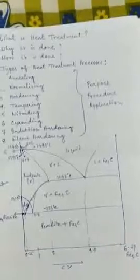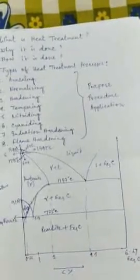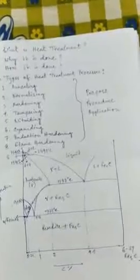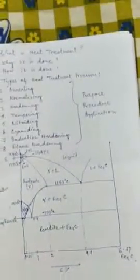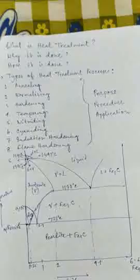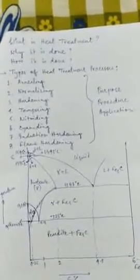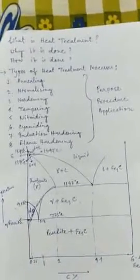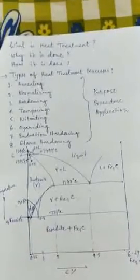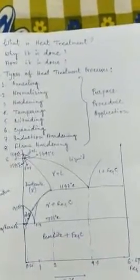Heat treatment is carried out without change of composition, to change the grain size, to modify the structure of the material, and to relieve internal stresses. The heat treatment process is done to improve machinability, to improve magnetic or electrical properties, and to increase resistance to wear, heat, corrosion, and much more.